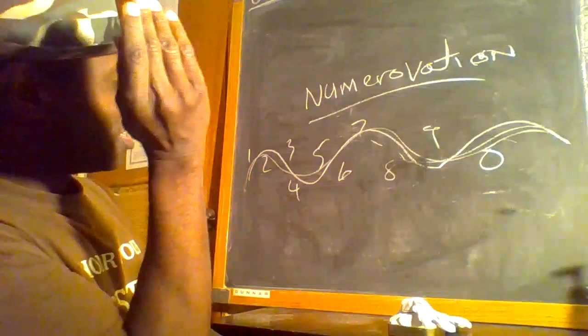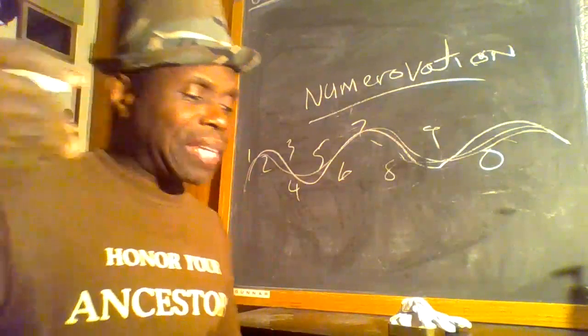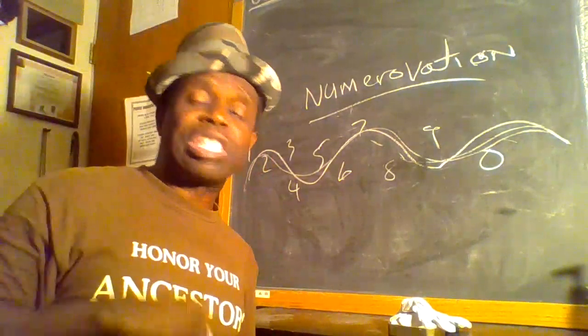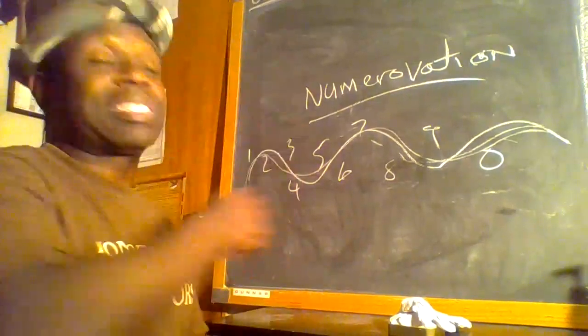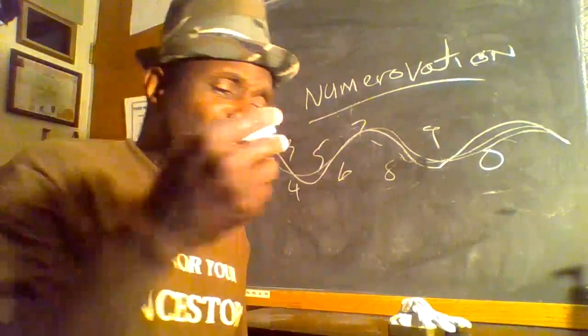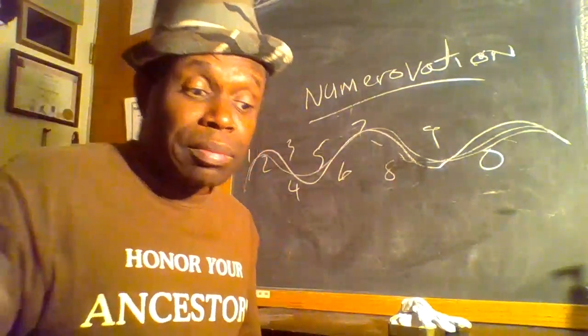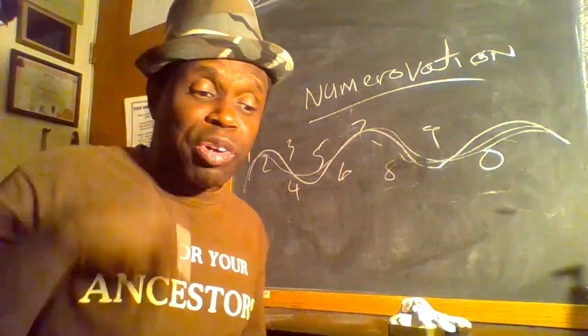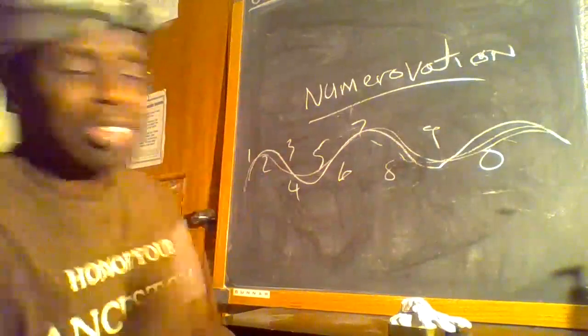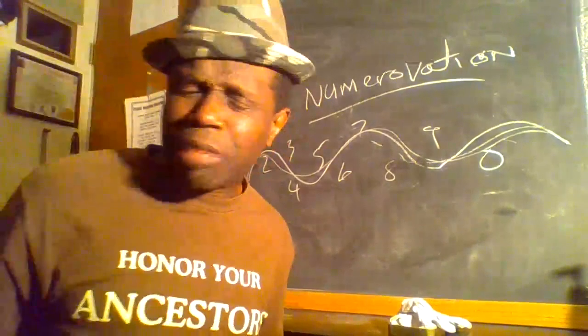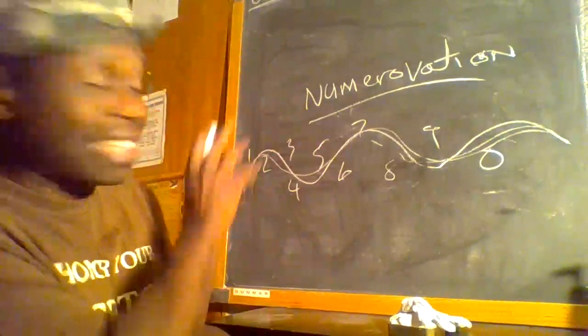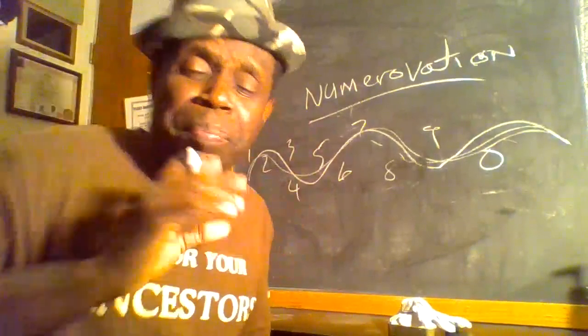You know number two is the intuition number. Or you know that the number three is the number of entertaining, self-expression or creativity also, but it's also the number of writing and expressing yourself. So you try to stay motivated on that higher level. And then you know the number four is the self-discipline number, the practicality number, and the concentration number.